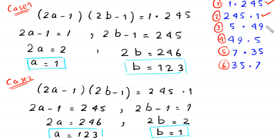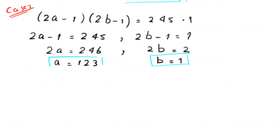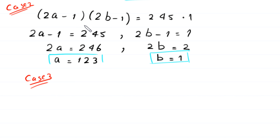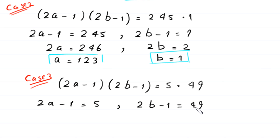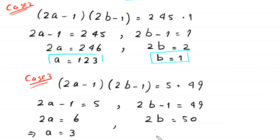In case 3, we write (2a minus 1) times (2b minus 1) equal to 5 times 49. So 2a minus 1 equals 5, and 2b minus 1 equals 49. Adding 1 to both sides of the first equation gives 2a equals 6, so a equals 3. Adding 1 to both sides of the second equation gives 2b equals 50, so b equals 25. From this case we get a equals 3 and b equals 25.